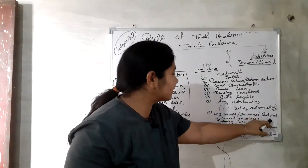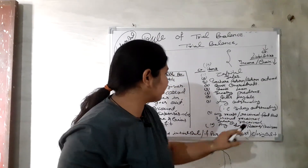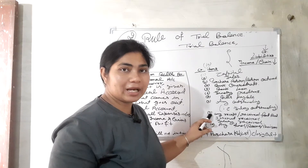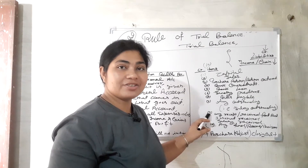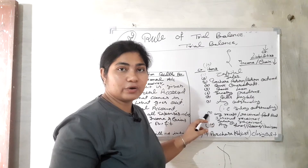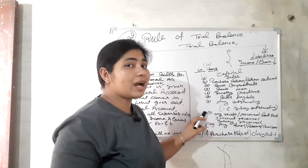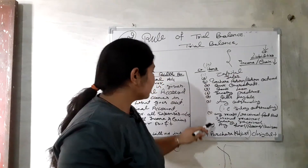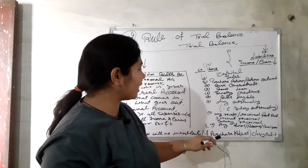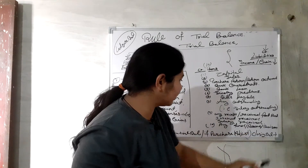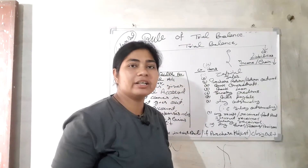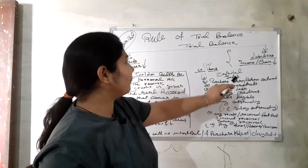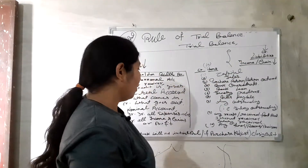Ninth is any income received — rent received, interest received, salary received — all of these are your income. Rent received is income; interest (byaj) received is also your income and gain. Tenth is any fund, reserve, or provision — any type of fund, reserve, or provision comes on your credit/liability side.